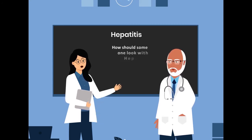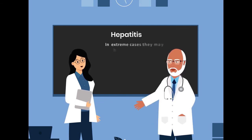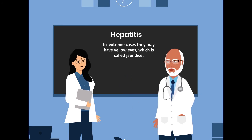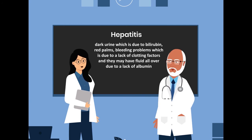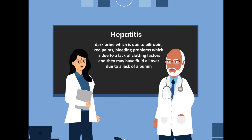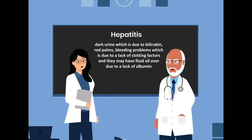How should someone look with Hepatitis B? In extreme cases, they may have yellow eyes, which is called jaundice. Dark urine, which is due to bilirubin. Red palm and bleeding problems, which is due to a lack of clotting factors. And they may have fluid all over due to a lack of albumin.